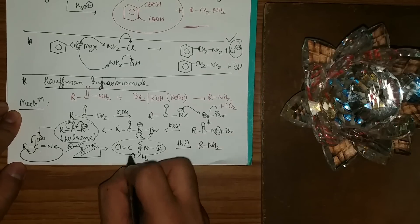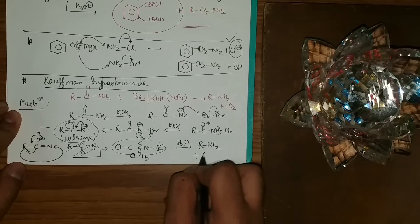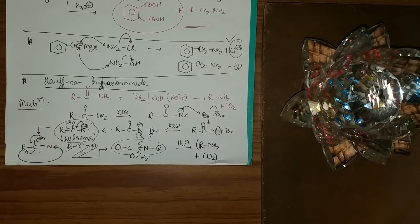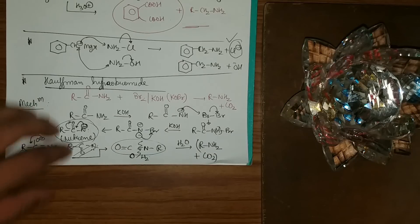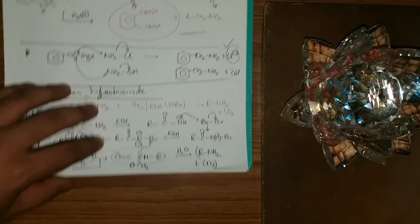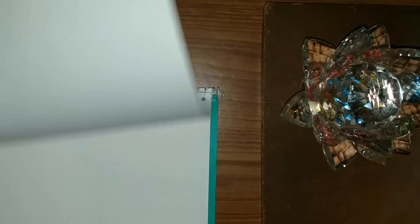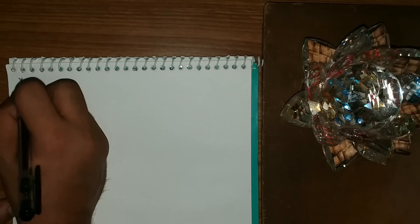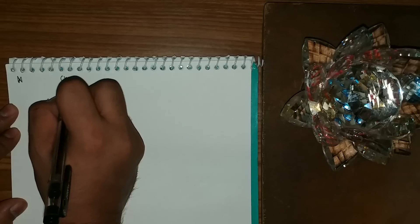On hydrolysis with H2O, water breaks the isocyanate bond: H goes here and O goes here, giving R-NH2 plus CO2. A question can also be asked: which reaction gives the lime water test? This reaction does, since CO2 is released at the end.